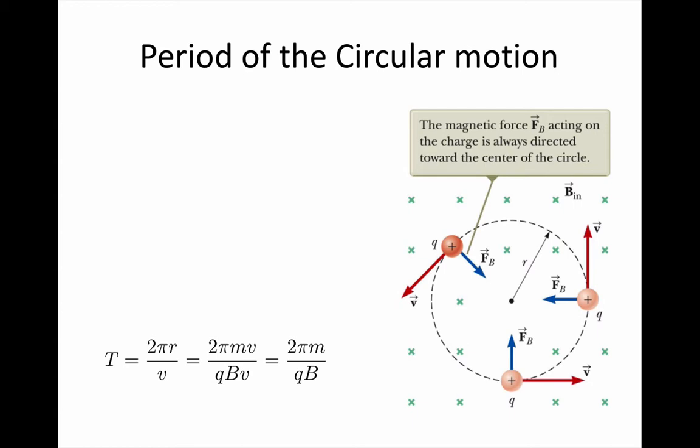The distance is the circumference of the circle, which is 2πr, and v is our speed.